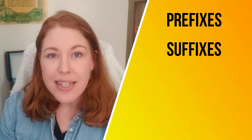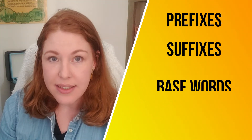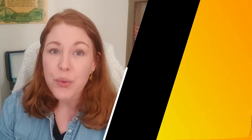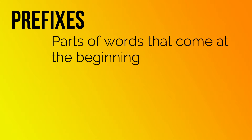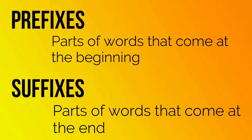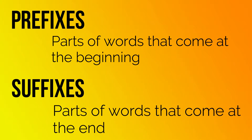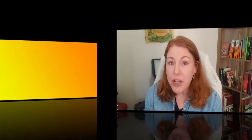Such as prefixes, suffixes, base words, and root words. A prefix is a part of a word that comes at the beginning. A suffix is a part of a word that comes at the end. Prefixes and suffixes have to have a root word or a base word in order to be a complete word.